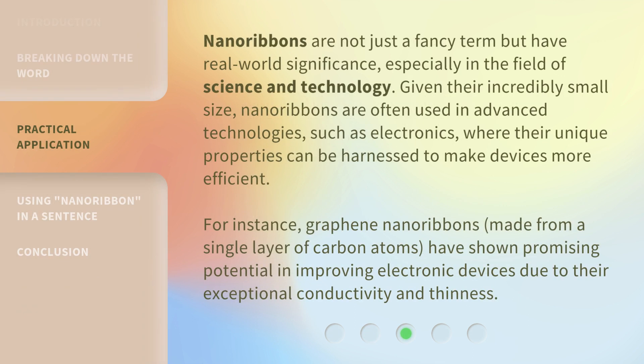Nanoribbons are not just a fancy term but have real-world significance, especially in the field of science and technology. Given their incredibly small size, nanoribbons are often used in advanced technologies, such as electronics, where their unique properties can be harnessed to make devices more efficient. For instance, graphene nanoribbons, made from a single layer of carbon atoms, have shown promising potential in improving electronic devices due to their exceptional conductivity and thinness.